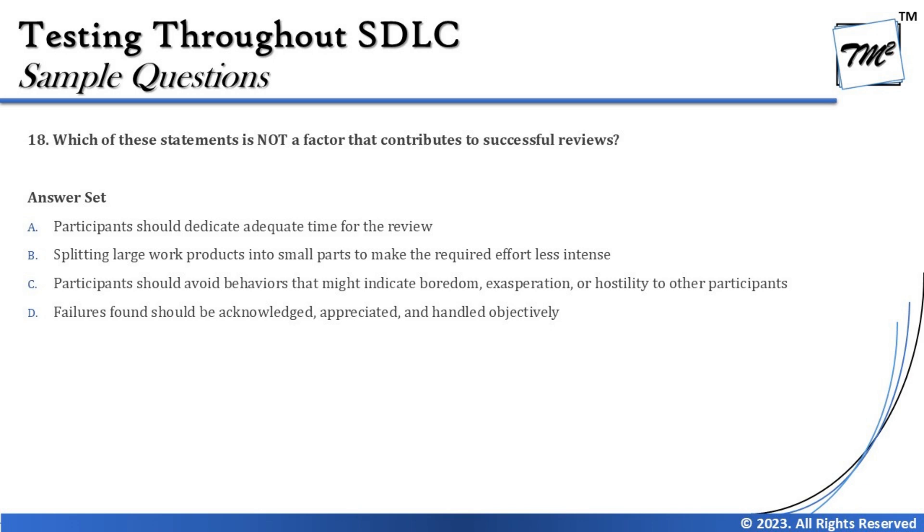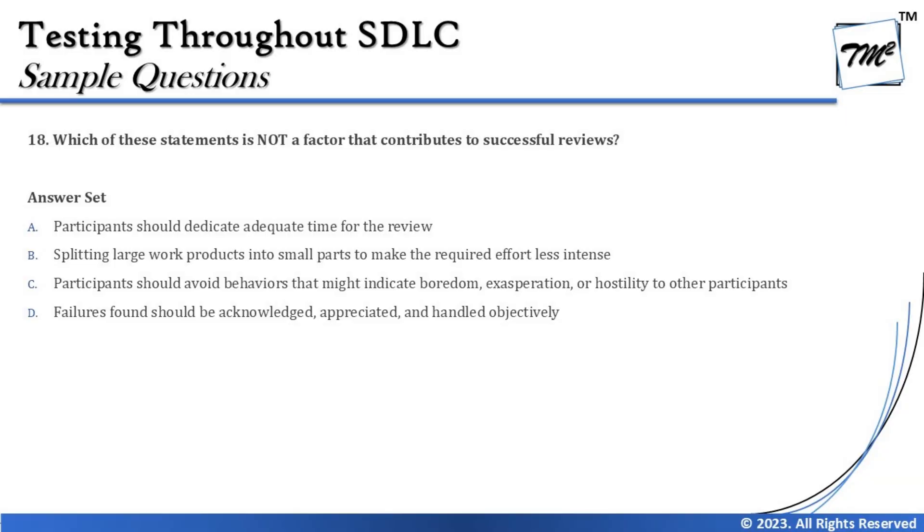Option C: participants should avoid behavior that might indicate boredom, exasperation, or hostility to other participants. This means avoiding hijacking the meeting — such as seniors not letting juniors talk or participants not being able to contribute effectively. It is crucial that the team gives everyone enough time and environment to contribute, since reviews depend on everybody's input. So avoiding such behavior leads to review success — this is a benefit.